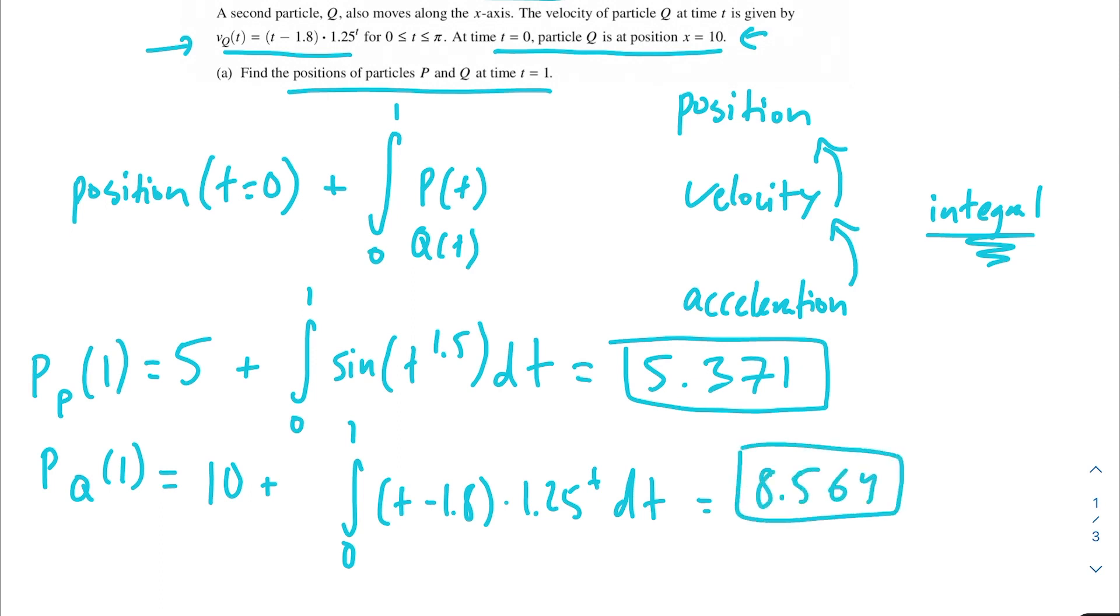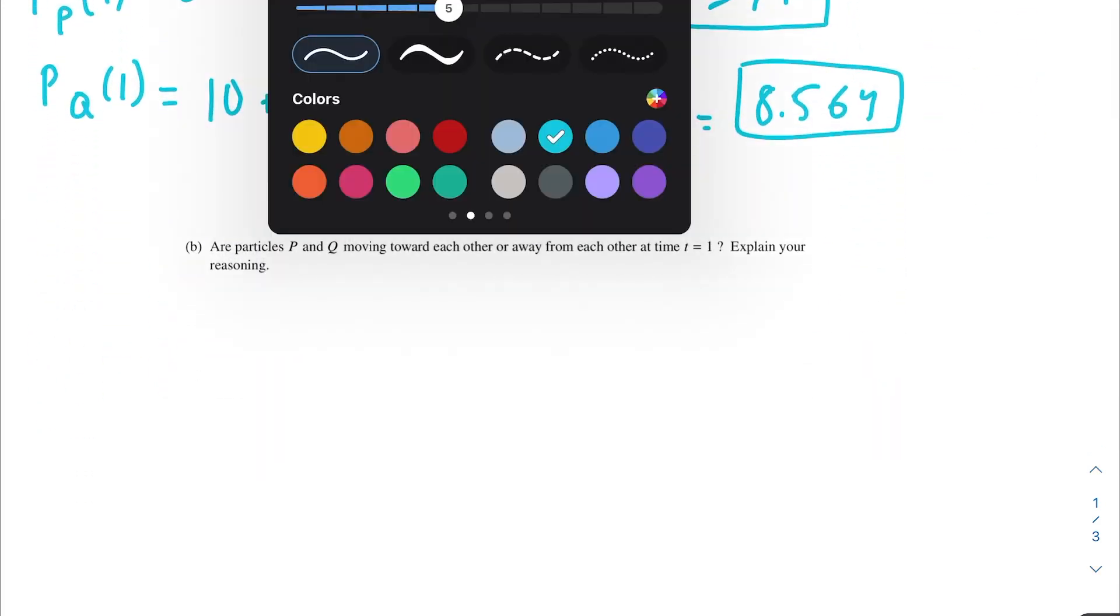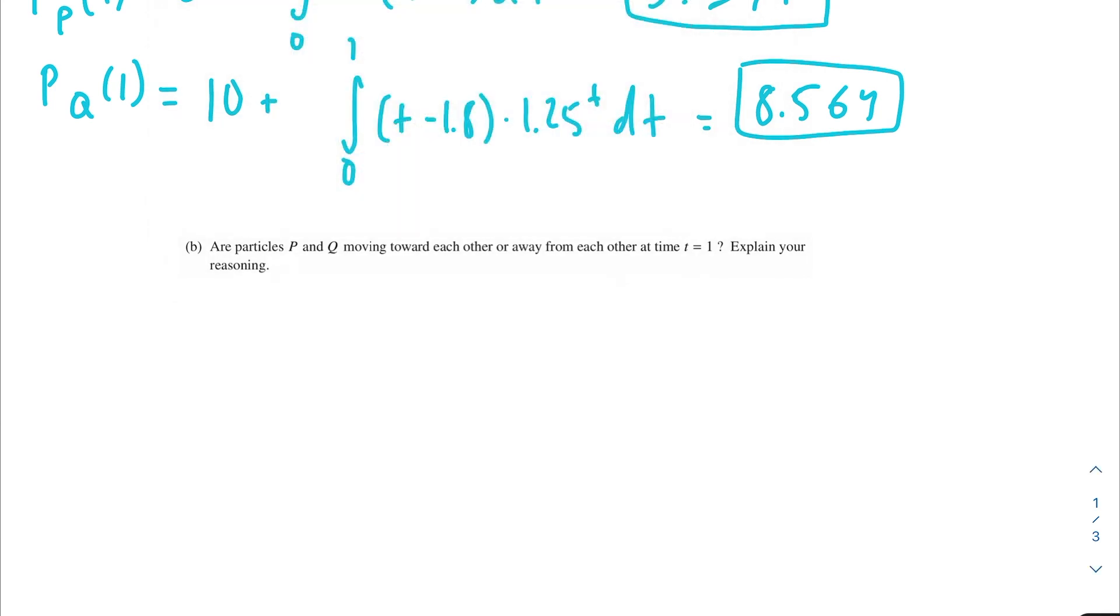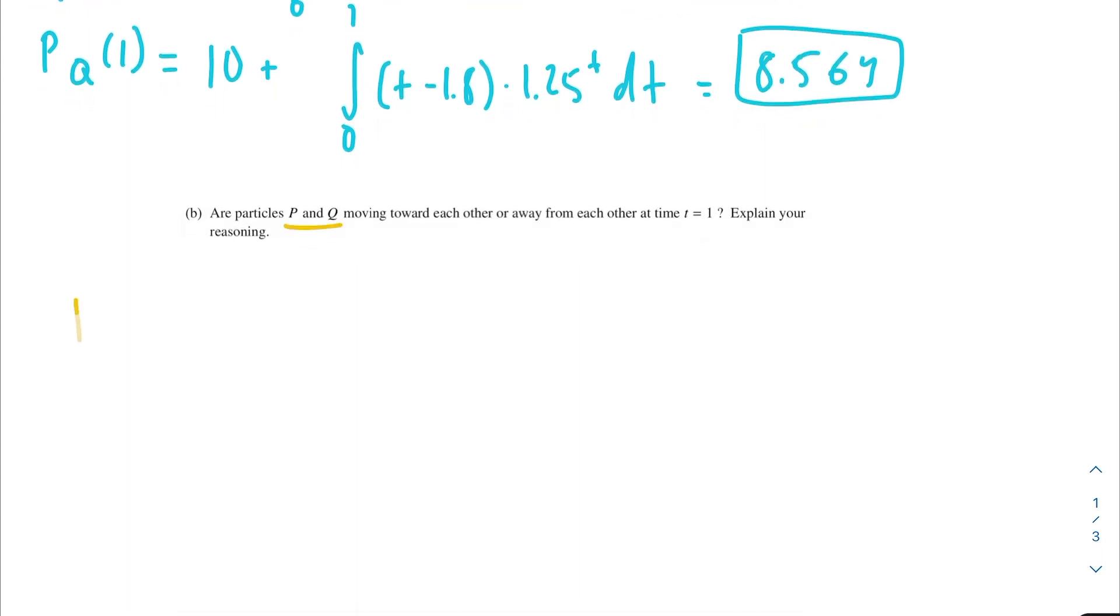So those are the two answers for our positions. Moving on to the next problem, are particles P and Q moving towards each other or away from each other at time t equals 1? Explain your reasoning. Because both of these particles are moving along the x-axis, we can use the velocity, and more specifically the velocity sign, to determine which direction they're moving in.